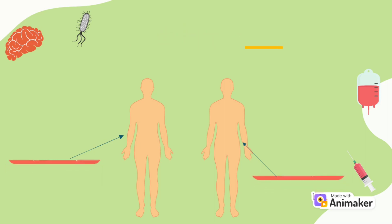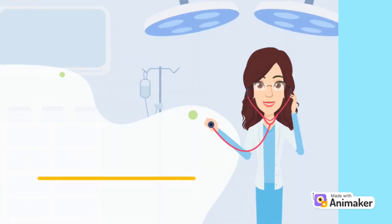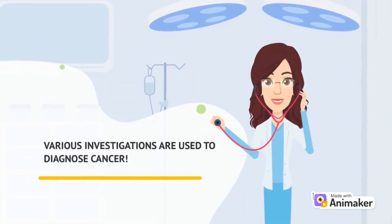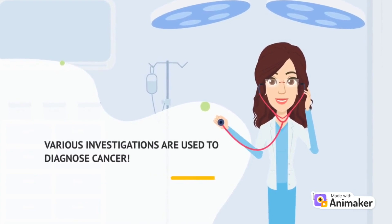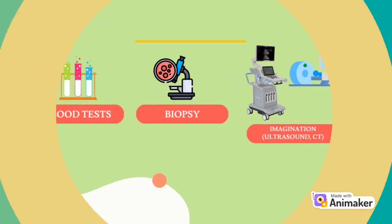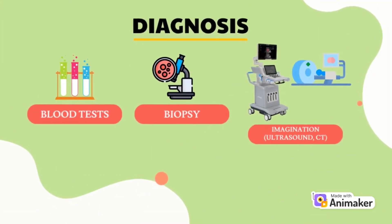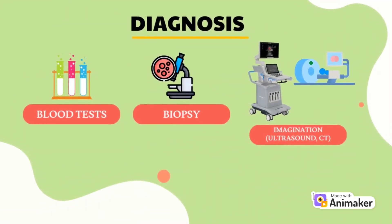Various investigations are used to diagnose cancer. These might include blood tests, imaging tests, and a biopsy, where the cells are taken for examination under a microscope. If a tumor is found, these investigations help determine the type, size, and spread of cancer, which is called its stage.